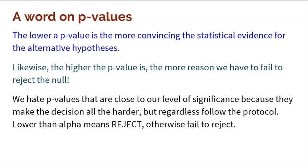The lower a p-value is, the more convincing the statistical evidence is for the alternative hypothesis. Likewise, the higher the p-value, the more reason we have to fail to reject the null. We dislike p-values that are right on the line with the significance level because those decisions are hard. Regardless, follow the protocol: if you're below that alpha level, reject; otherwise, fail to reject.